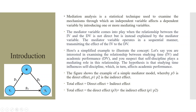Let's try to understand this concept in layman language. A child wants to go to the picnic. The child can convince the father directly, or the child will try to convince the mother and the mother will convince the father. So the mother becomes a mediator. The mediator variable comes into play when the relationship between the independent variable and the dependent variable is not direct but is instead explained by the mediator variable.